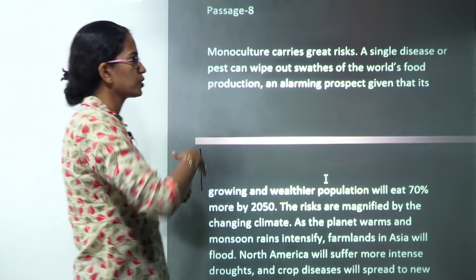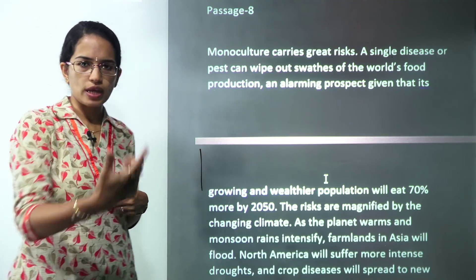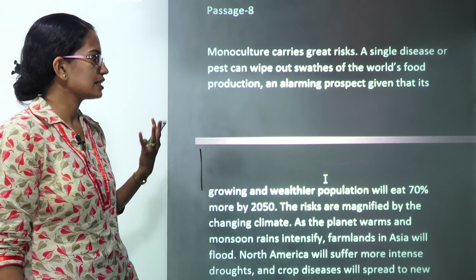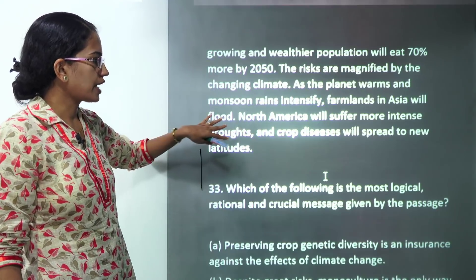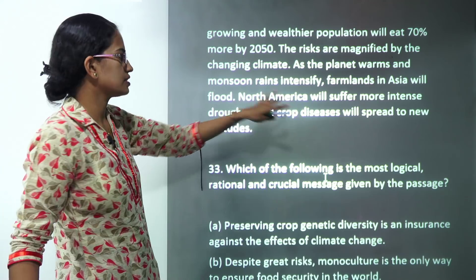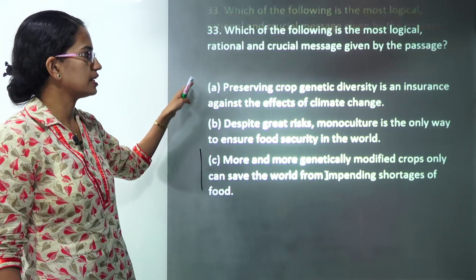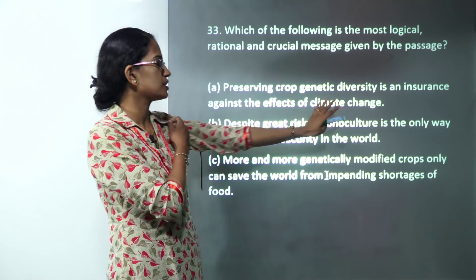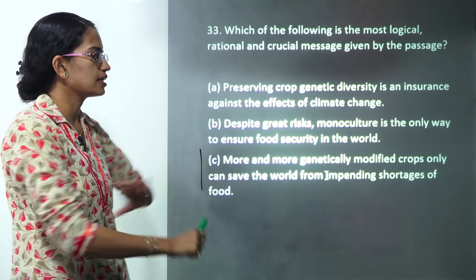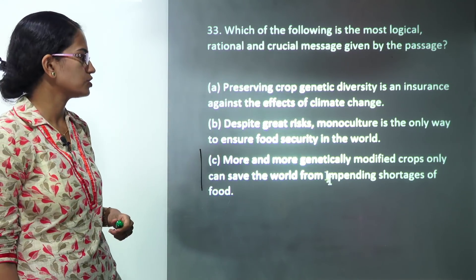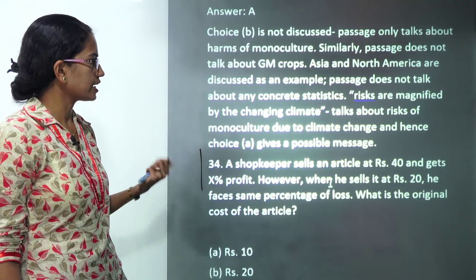The next question is from monoculture. Now monoculture means practicing just one crop. Definitely if only one crop is practiced the risk increases. We have talked about how it would affect the regions of Asia and North America. But what is the key aspect here is we are trying to preserve the crop genetic diversity as an insurance against the effect of climate change. So that's the most logical inference that could be drawn. So A is the correct choice here.